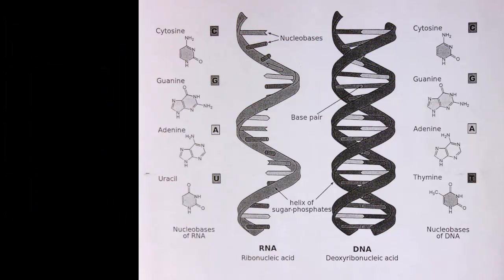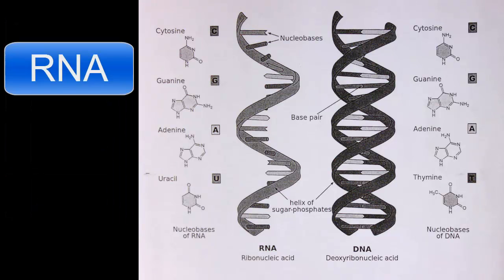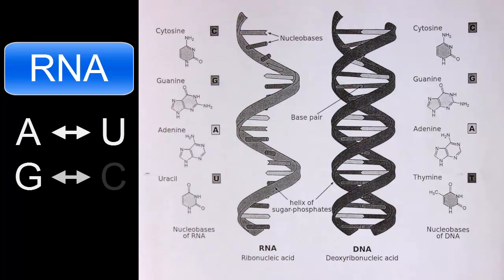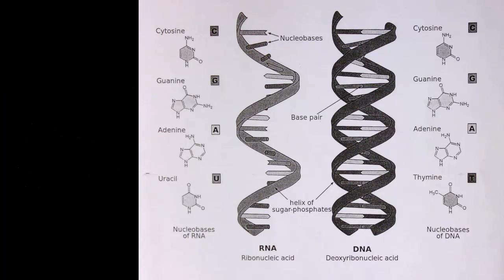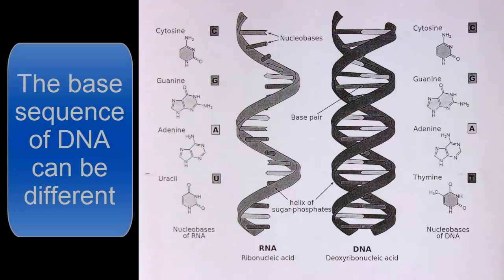The base pairing rules for RNA are A goes with U and G goes with C. There is only one type of DNA. All species have the same molecule, DNA. What is different is the base sequence in the molecule.